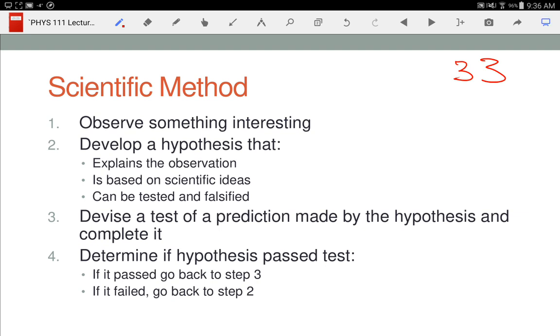So these steps, you need to have memorized. There's not that much we ask you to memorize in a physics class. We're asking a lot more for thinking. But you need to memorize these steps. Know that the hypothesis—what does hypothesis mean? An educated guess. Your educated guess needs to explain why the observation occurred, and it needs to be based on scientific ideas, and it needs to make predictions that can be tested.